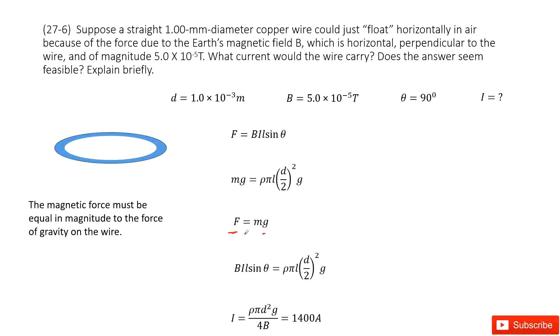Now we can first write the magnetic force on a current by magnetic field density. That is BIL sine theta.